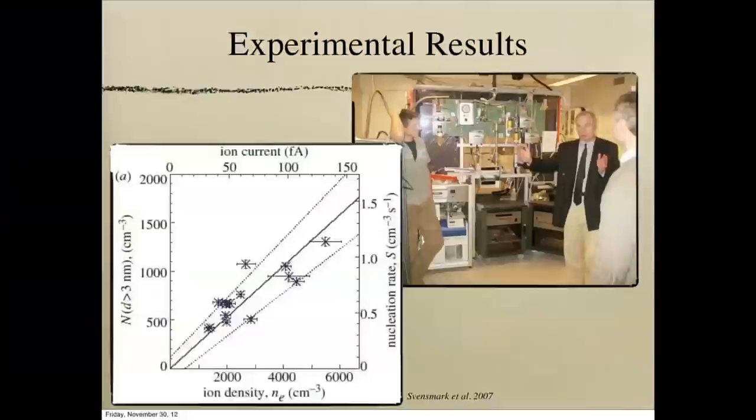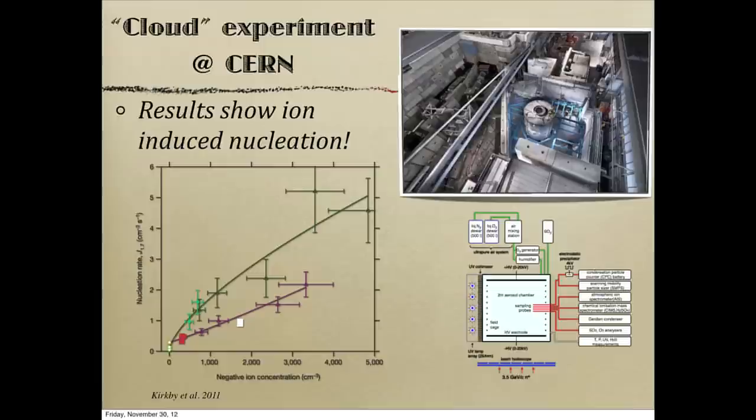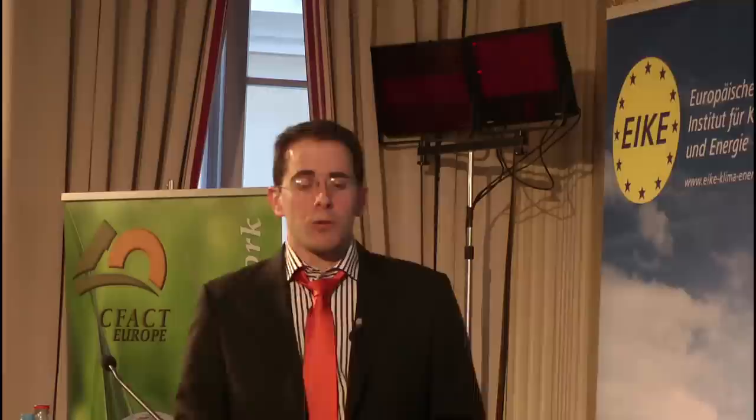This is a lab experiment run in Copenhagen by Henrik Svensmark. When you increase the amount of ionization in the chamber, you increase the formation rate of condensation nuclei. This experiment was repeated at CERN with better-controlled conditions in the chamber, and you can see exactly the same result: when you increase the ion concentration in the chamber, you increase the nucleation rate. So by playing with the density of ions, you change the density of condensation nuclei.